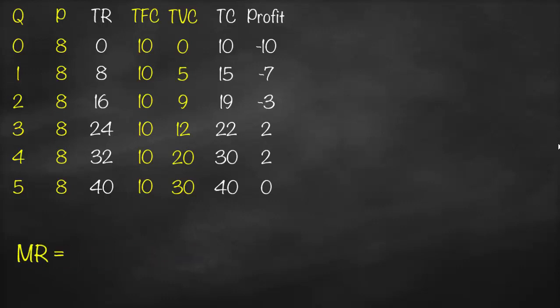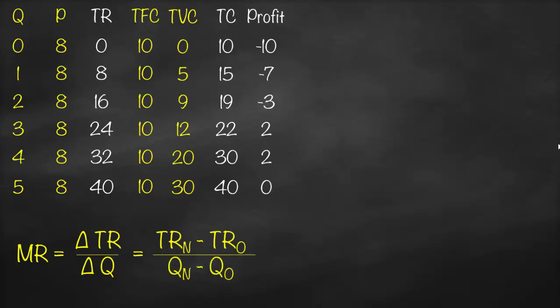Marginal revenue is the additional revenue when we sell one more unit. It is the change in total revenue divided by the change in quantity — new total revenue minus old total revenue, divided by new quantity minus old quantity. For producing one unit, that is 8 minus 0 divided by 1 minus 0, which gives us 8.